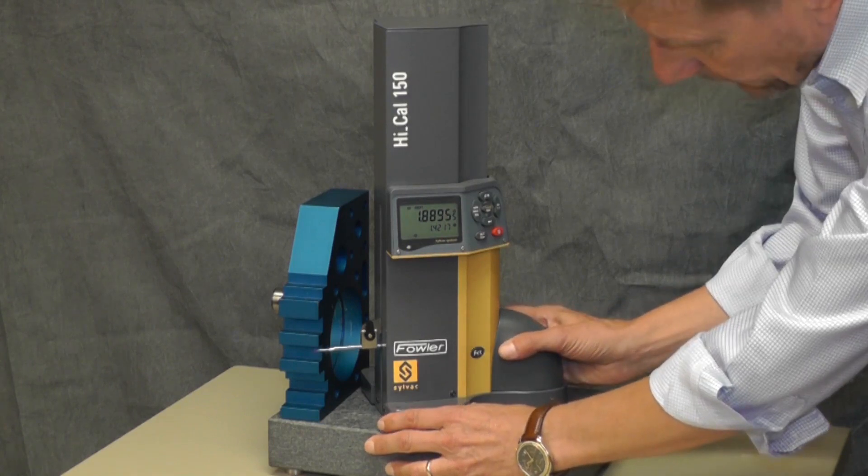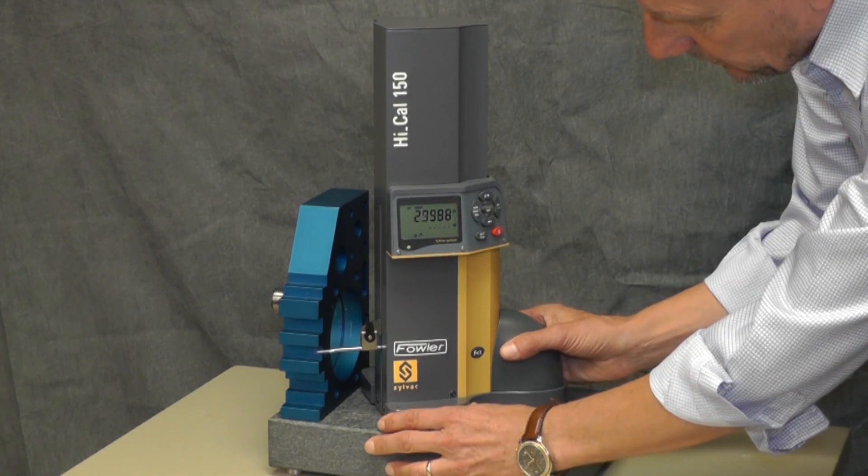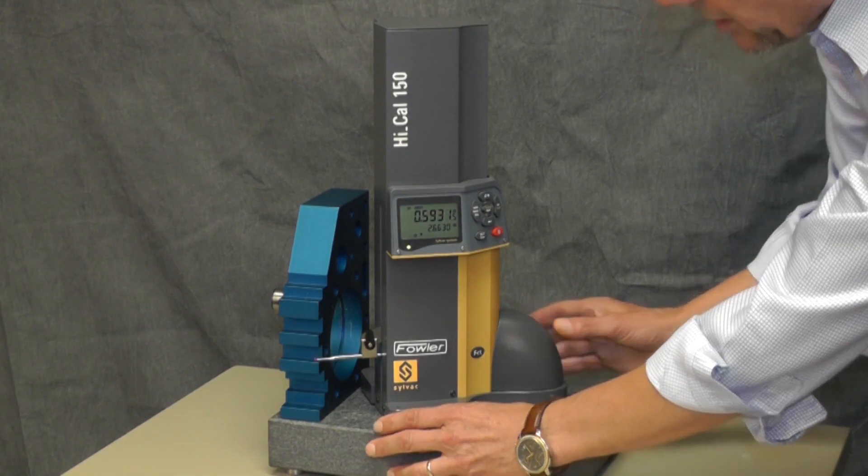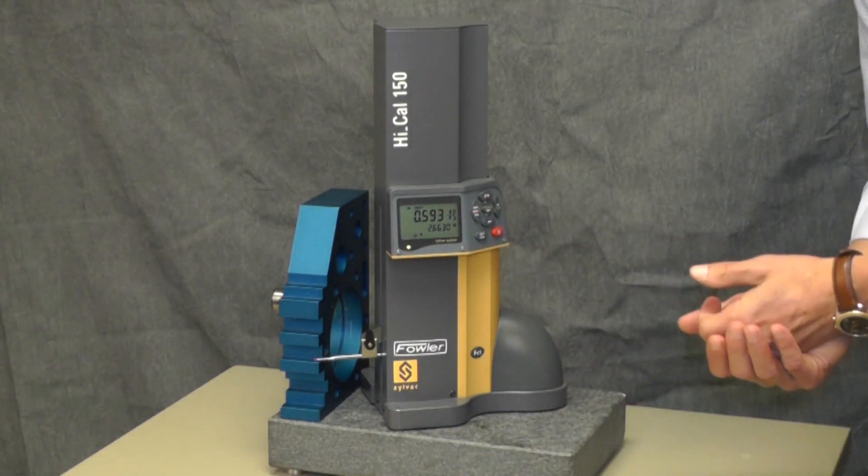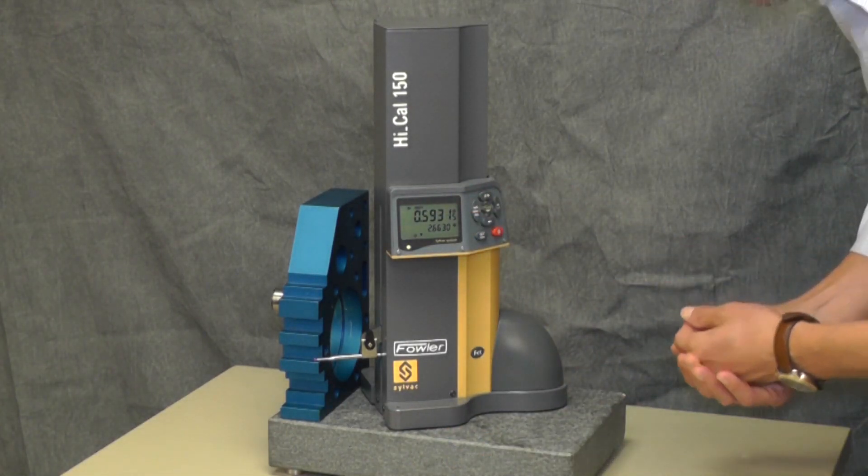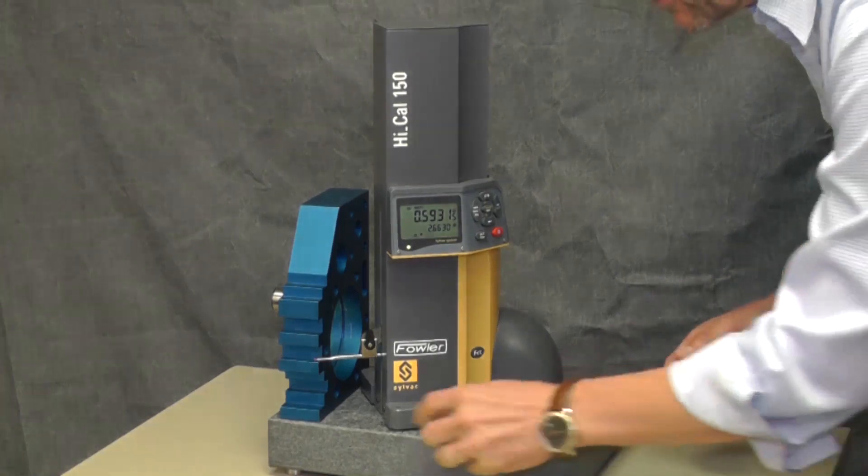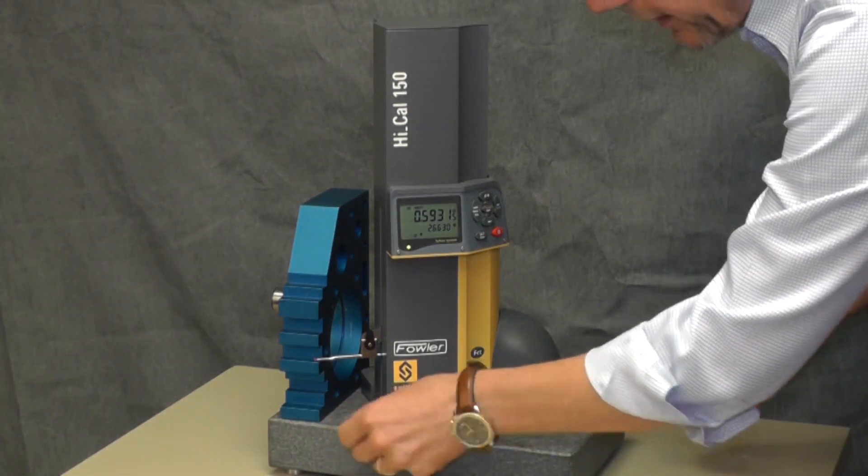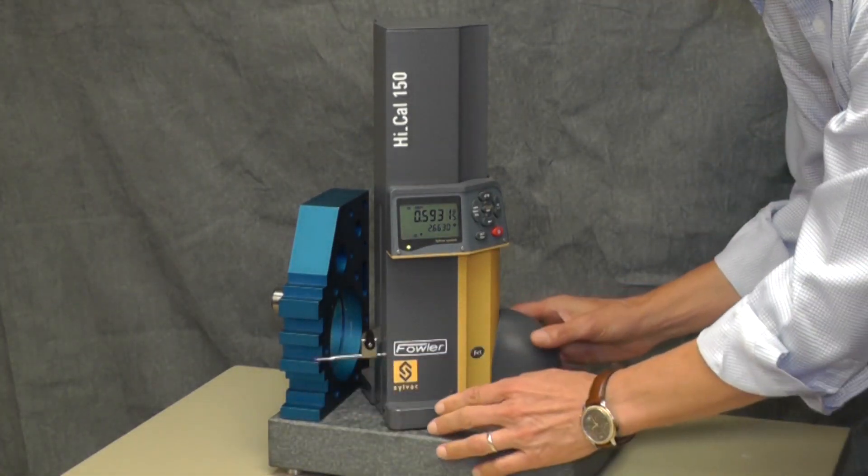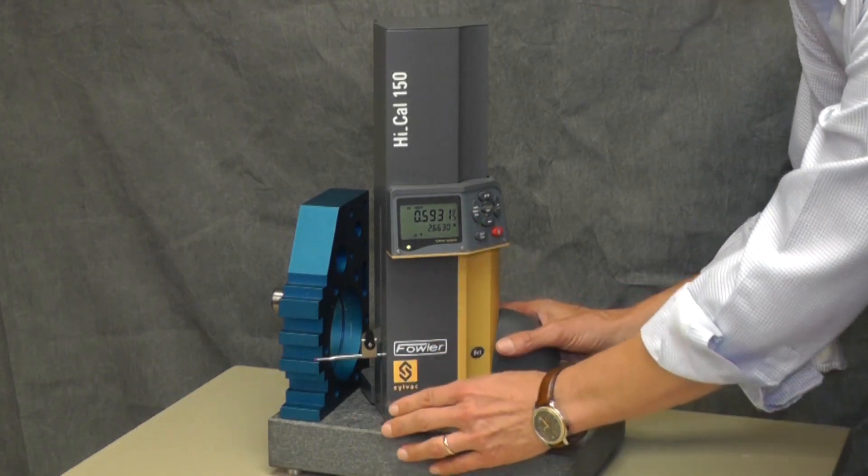So I'm ready for the base. I have the distance on the first line of my display, and I have the center line, so the distance from the granite plate to the center of my slot, on the second line of my display.